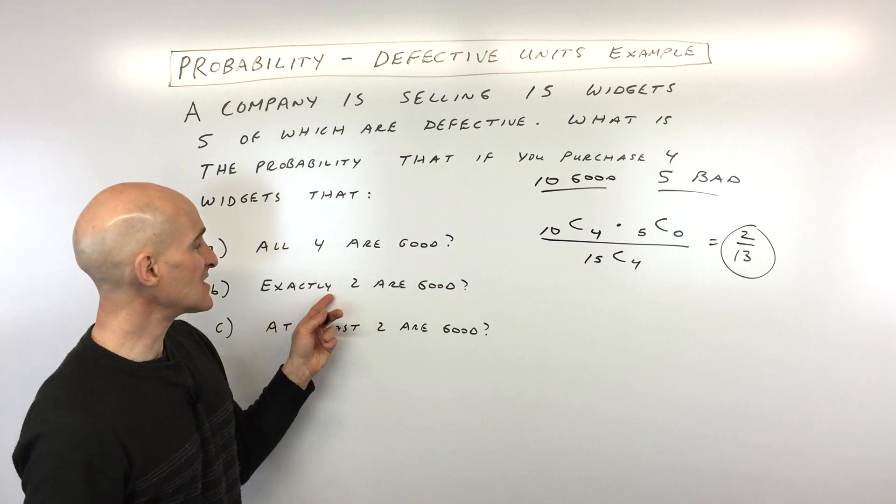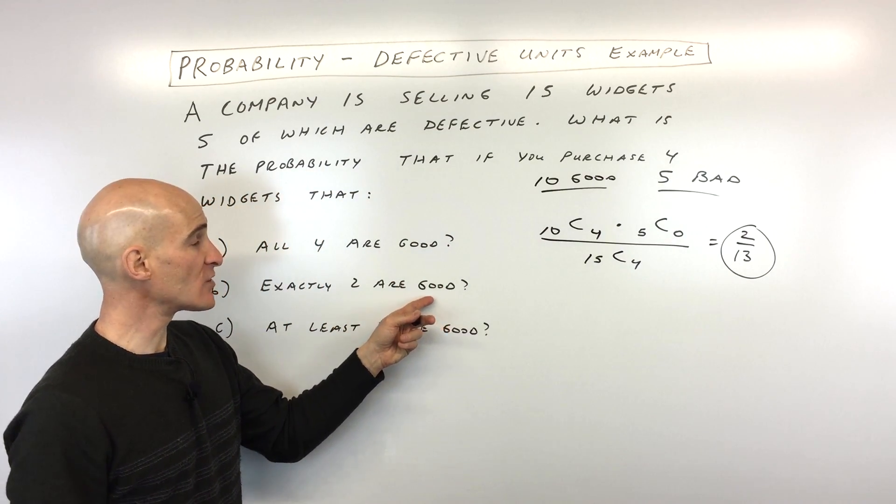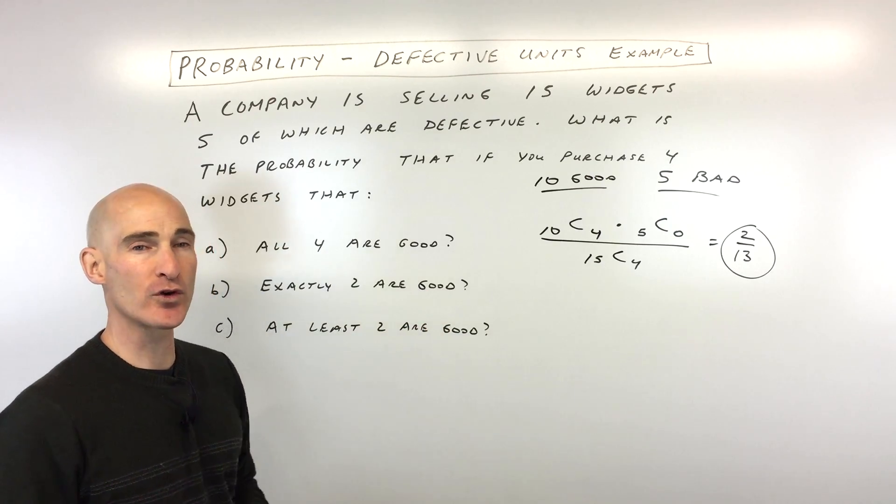Okay, let's go to part B now, it says exactly two are good. So that means if two are good, that means that two are going to be bad, right, because there's four total.